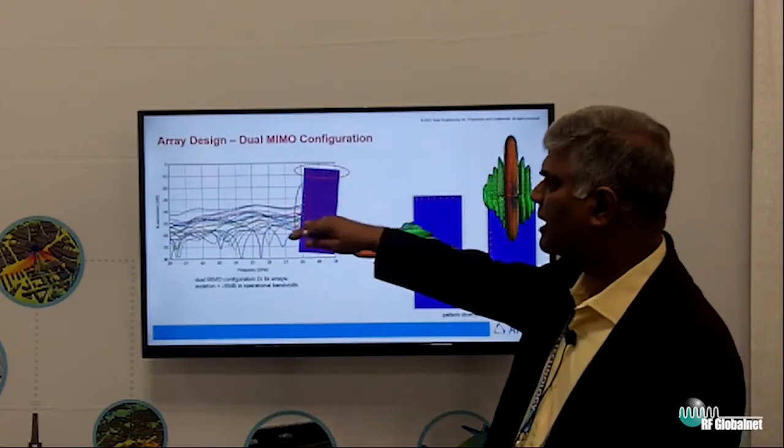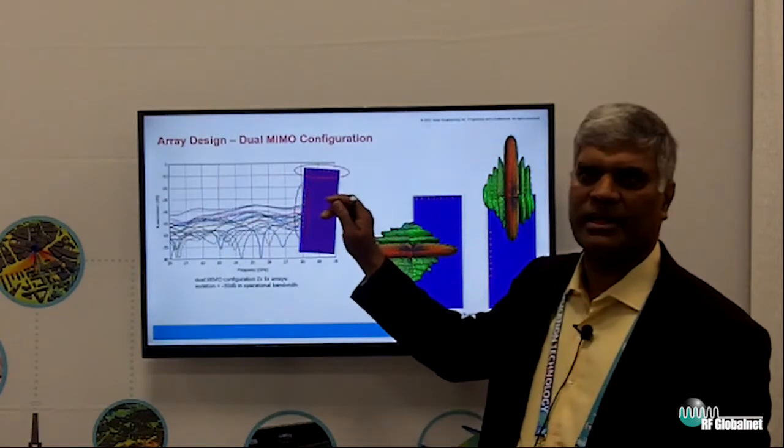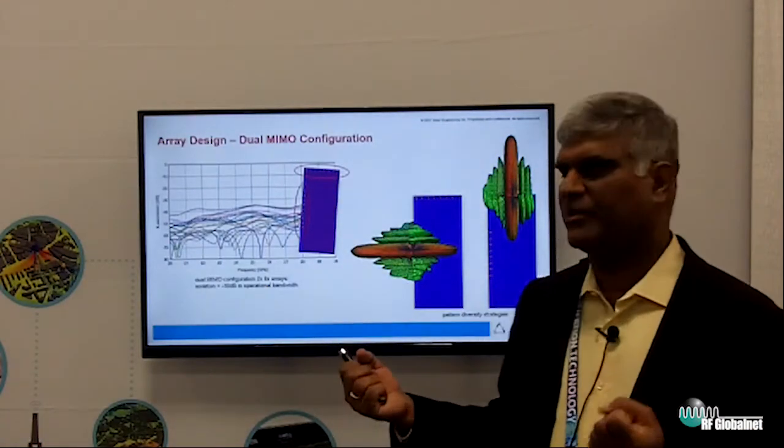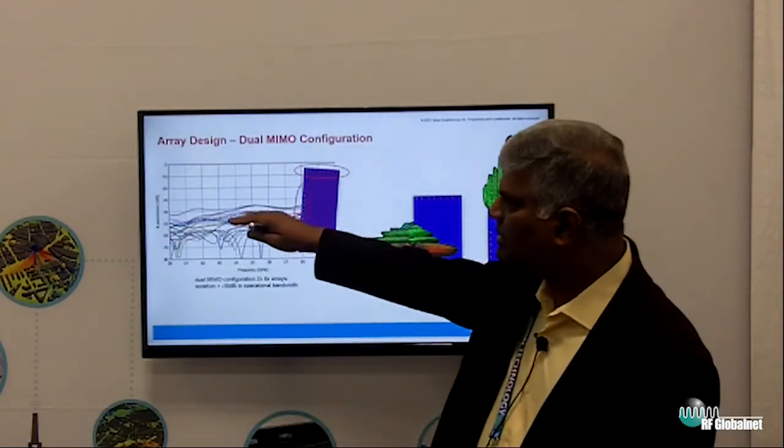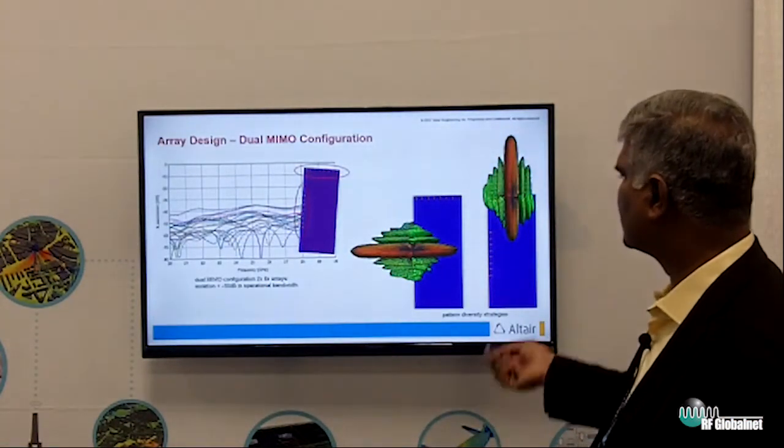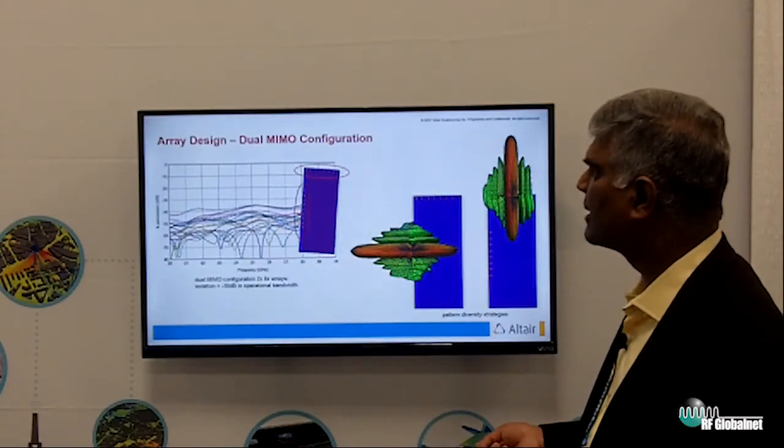Now, two of those arrays. One of the key things in MIMO is that when these two arrays are there, they need to have good isolation between them. You can see that the isolation is more than minus 40 dB, which is pretty good. You can see the patterns of those two arrays here.